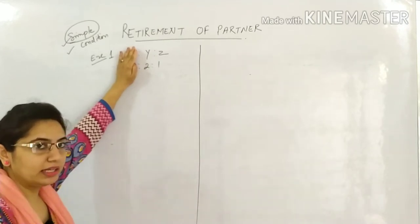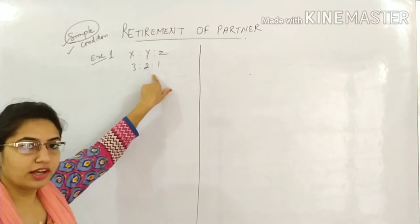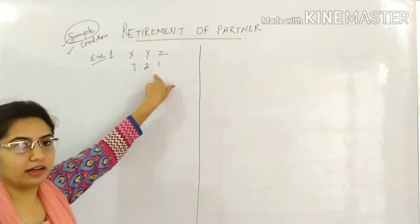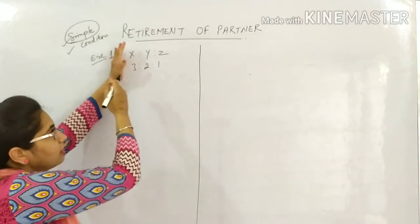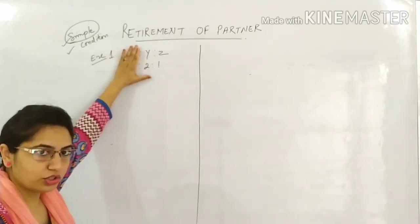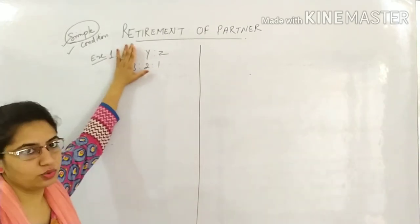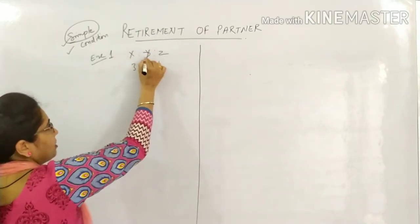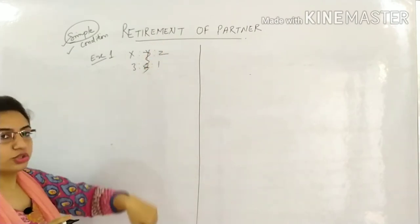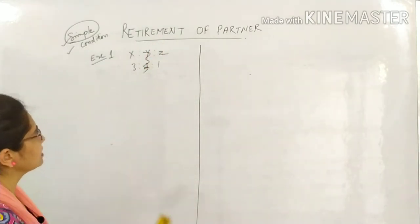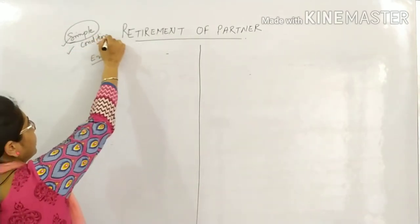The profit sharing ratio that was before will be adjusted. If Y retires, the remaining ratio between the others becomes 3:1. And if Z retires, the ratio becomes 3:2. This was a very easy, basic question. Now we are moving towards the second method, which involves condition-based questions.